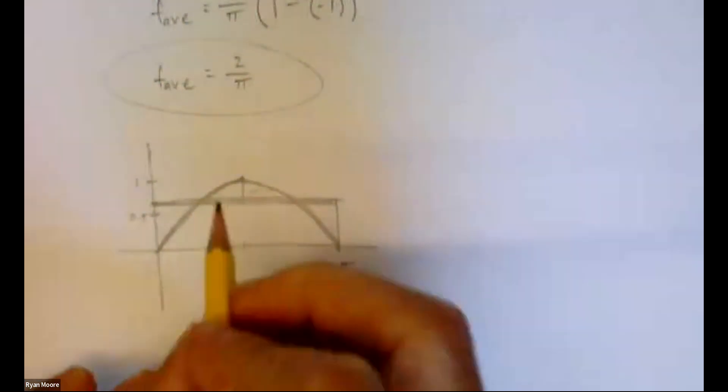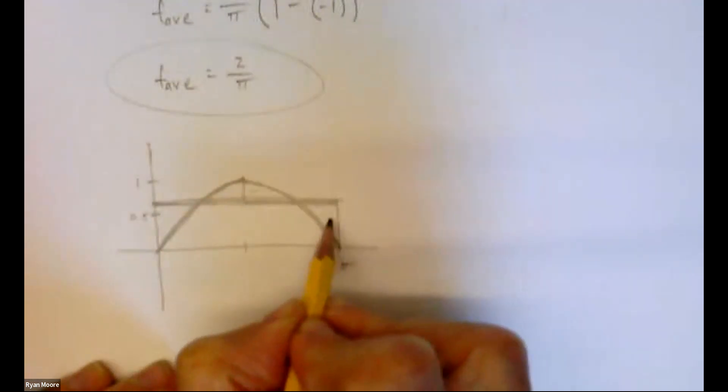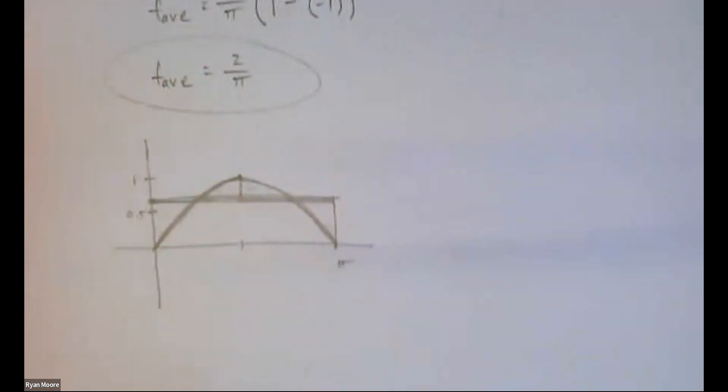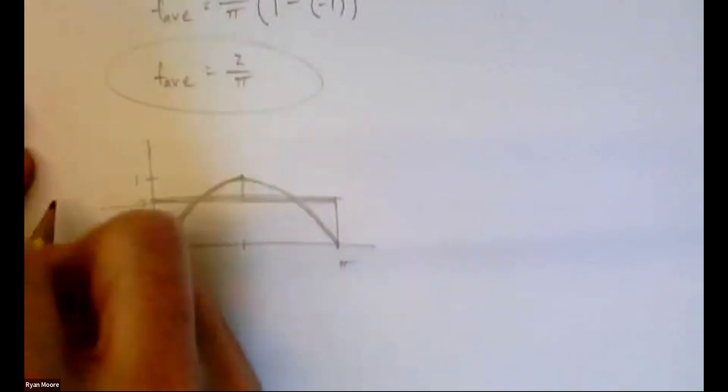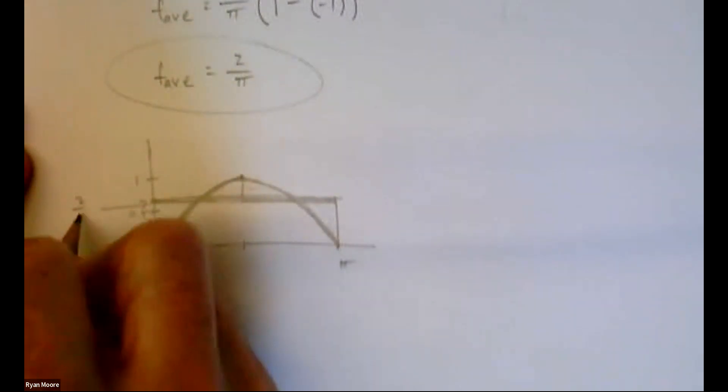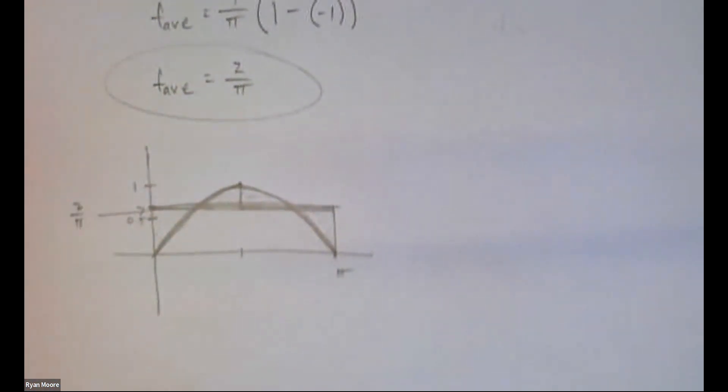So maybe it's a little bit lower than what I drew. Okay, maybe something like that. So that would cut this area down. Okay, that looks a little bit better. In any case, it is above halfway, kind of what I was trying to get at. There's 2 over pi.